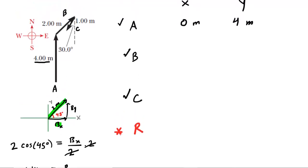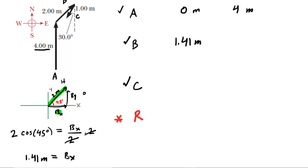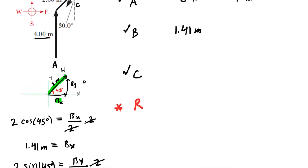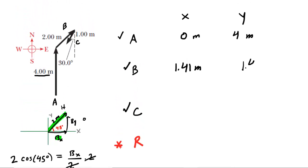We can go back up to the table and fill in positive 1.41 meters for the X component of vector B. For the Y component, BY is opposite the 45-degree angle with a hypotenuse of two meters, so we use sine: sine(45°) = BY / 2. Multiplying both sides by two gives BY = 2 × sin(45°) ≈ positive 1.41 meters for the Y component of vector B.